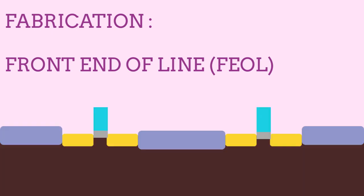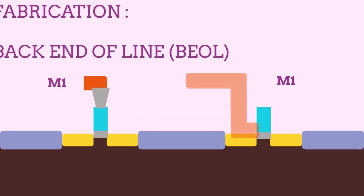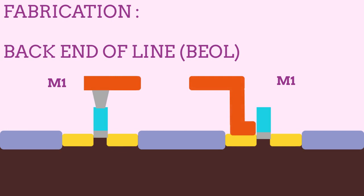Devices are fabricated in the silicon substrate by a process known as front end of line. FEOL is the first portion of IC fabrication where the individual components such as transistors, capacitors, and resistors are patterned in the semiconductor. FEOL generally covers everything up to, but not including, the deposition of metal interconnect layers.